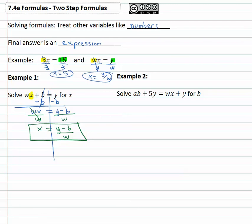Let's look at another example that's similar, where we treat everything else like a number except for the variable we want. Again, balancing through the equal sign, we want to solve ab + 5y = wx + y for b. The variable we're solving for this time is b.